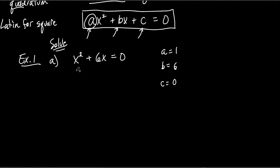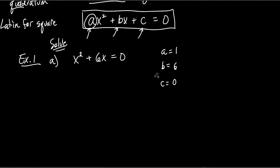We could sit there and just guess a whole bunch of numbers. Like, what about 2? Does 2 work? 2 squared is 4, plus 12 — that's 16. Nope, that's not 0. We could keep doing that all day long, but that's not very efficient. So what we need to do is come up with a better way to solve for x. One way is to factor — and that's what we're doing. This whole lesson today is just about factoring to solve for x.